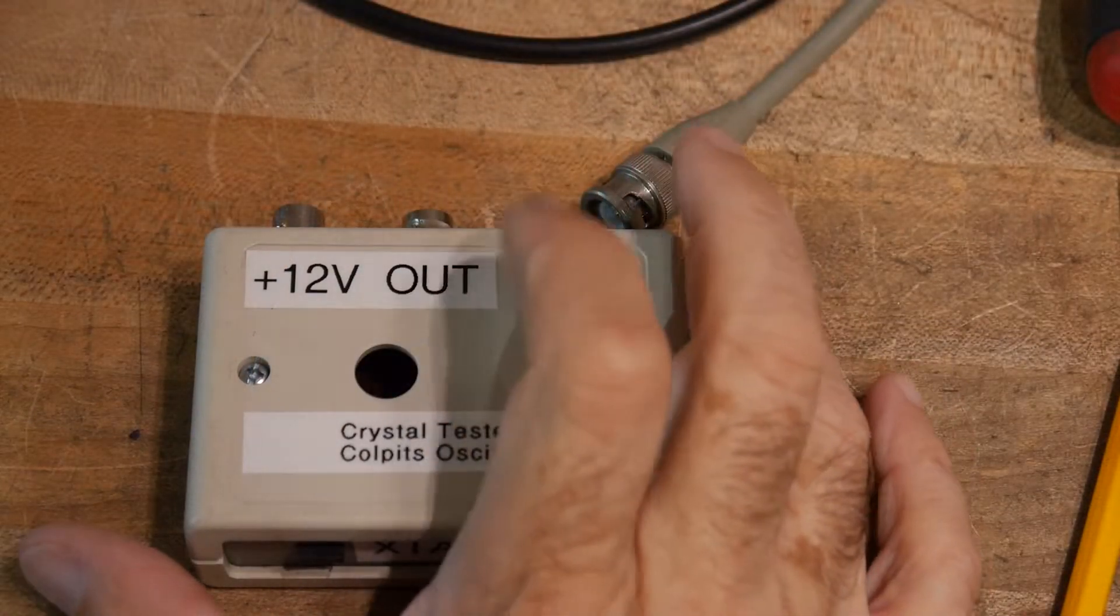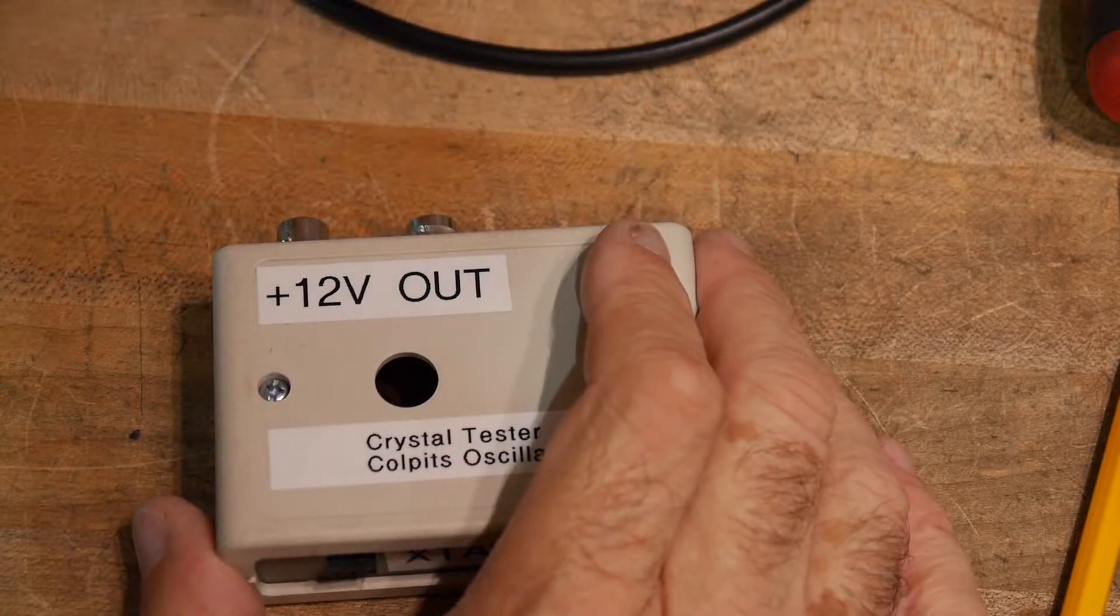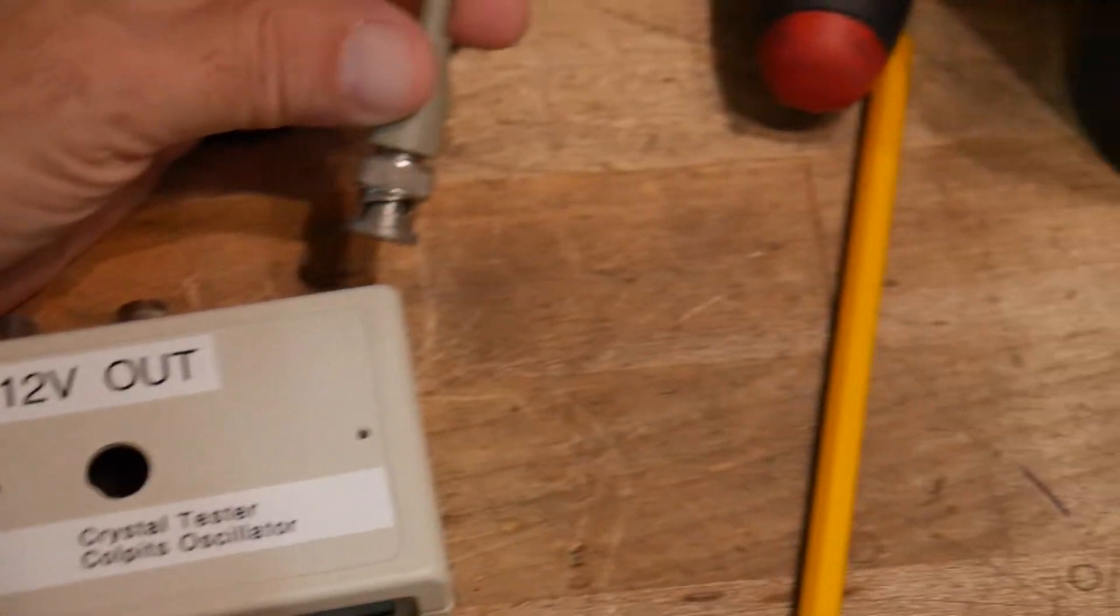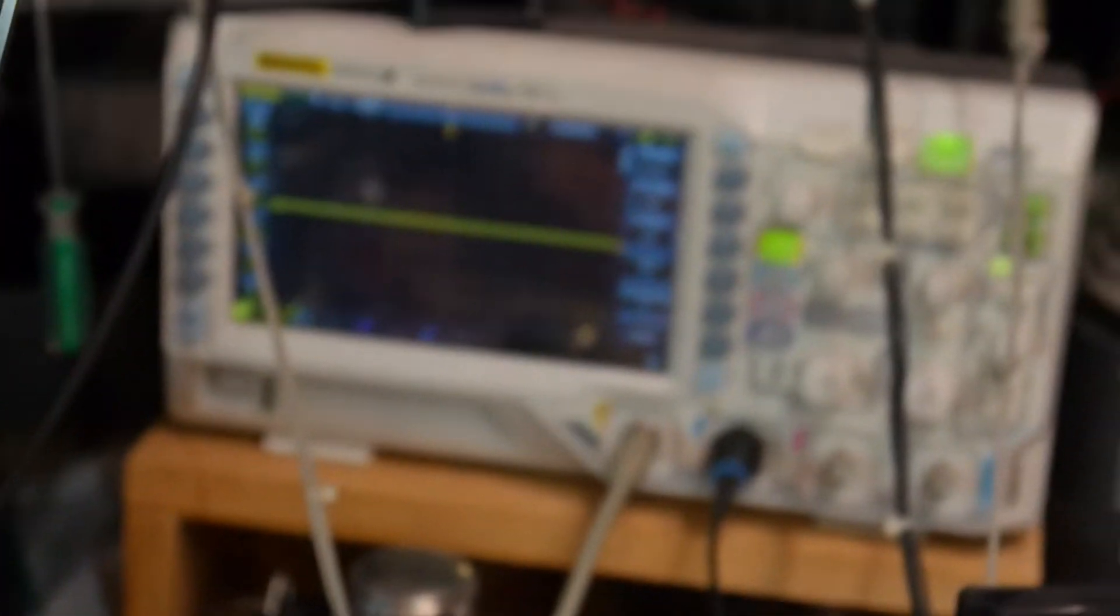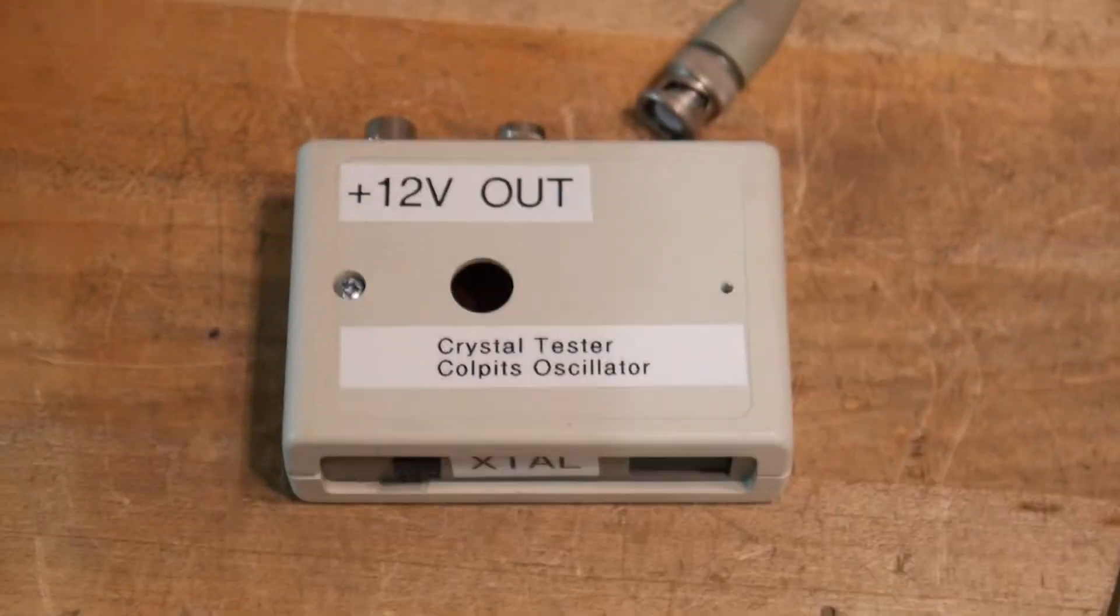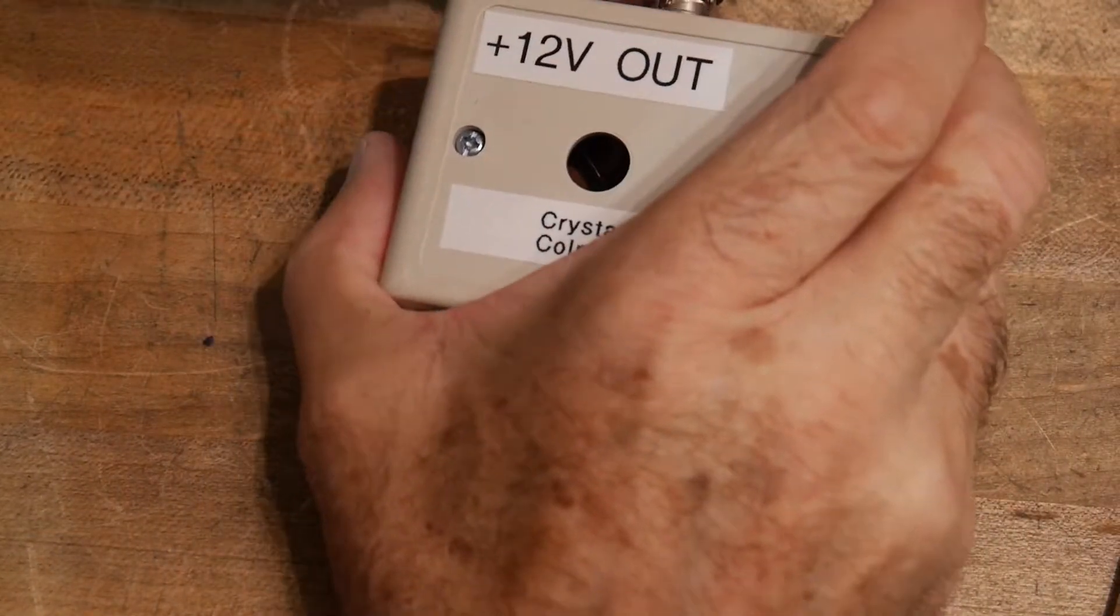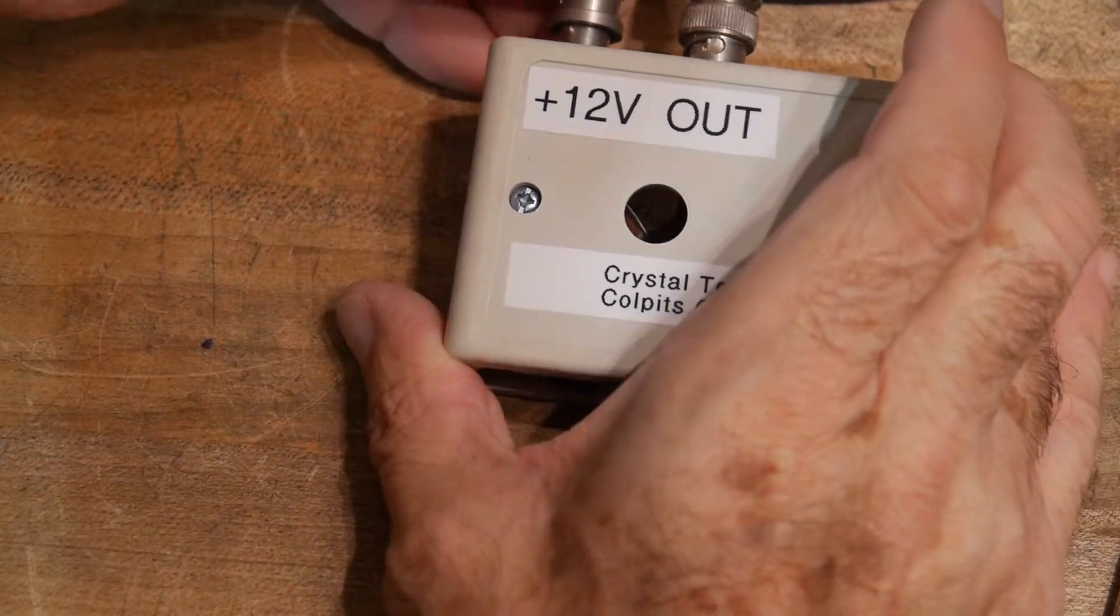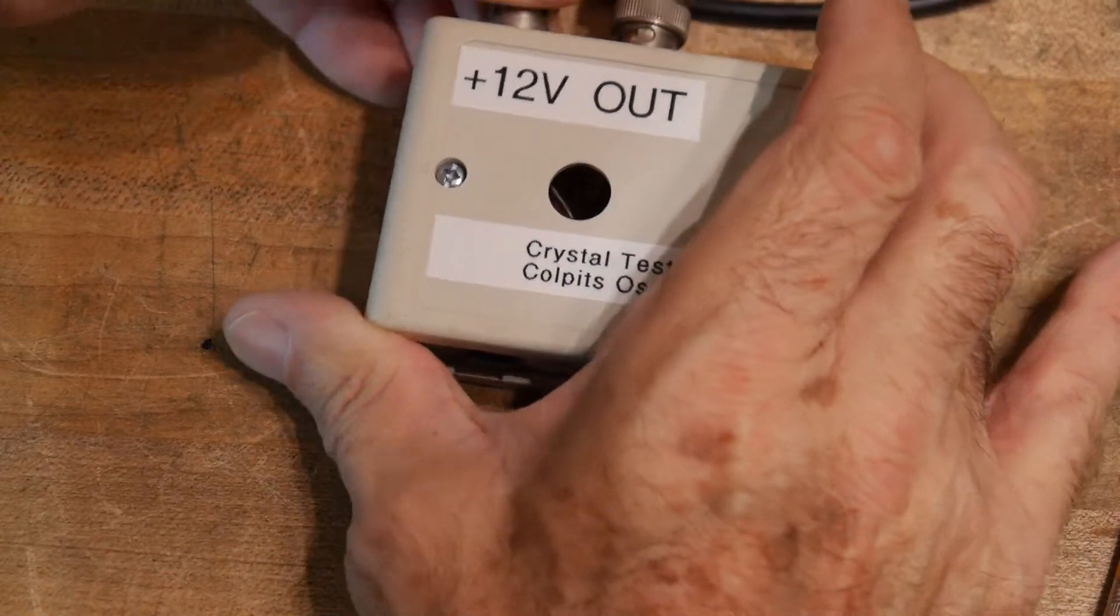Okay, I'm sure somebody wants to see this thing run. So here we go. This is a BNC that's going to go over here to the input of an oscilloscope. So let's put that up to the output. This is 12 volts. So it is now running.